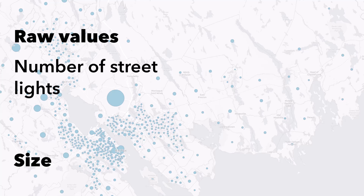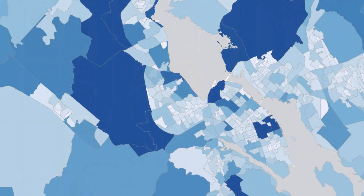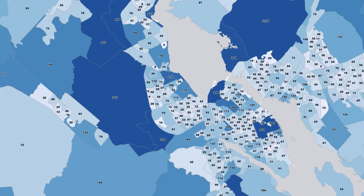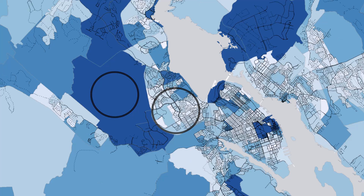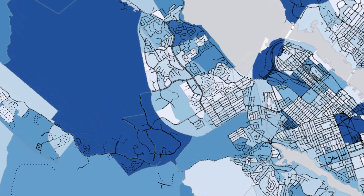But why should you not map raw values with color? Color symbology doesn't work well for raw values for two reasons. First, bigger areas tend to have more things in them just because they're big. Second, large dark areas on a map have an outsized impact on our visual perception. My eye is drawn to these big dark areas, and I assume that's where all the streetlights are. But when I look at the values, there are actually a lot more streetlights in the pale area than in the dark one. So if you map raw values with filled areas of color, you're probably going to end up with a misleading map.